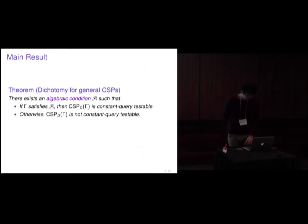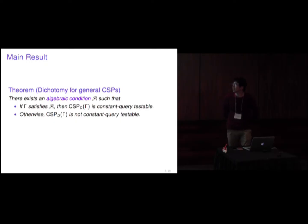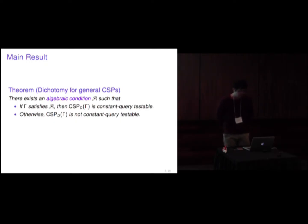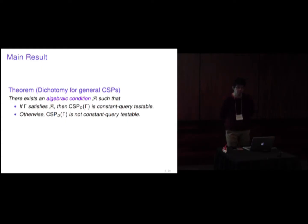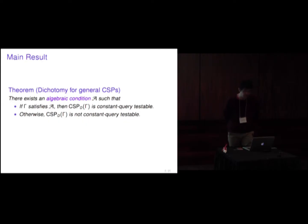The main result of this work is the following: there exists an algebraic condition A such that if gamma satisfies A, then CSP(D, gamma) is constant query testable, and otherwise CSP(D, gamma) is not constant query testable.